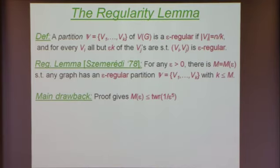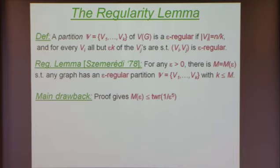Although the number of clusters is bounded, it's given by 2 to the 2 to the 2 to the 2, where the height of this tower is polynomial in 1 over epsilon. If you look at the proof — which is a one-page proof — you sense that there should be something more clever, that you can do better to get a better bound.